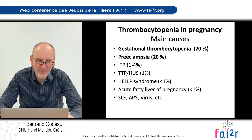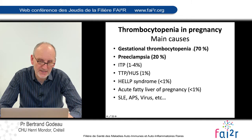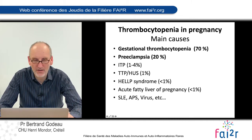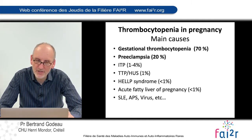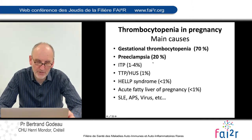The main causes of thrombocytopenia in pregnancy is mainly gestational thrombocytopenia, in 70% of cases. For pre-eclampsia, about 20%, but in my experience it's very rare that internists or hematologists are involved in this diagnosis because gynecologists are able to make the diagnosis without our help. ITP is the third cause, with a percentage of between 1 and 4%.